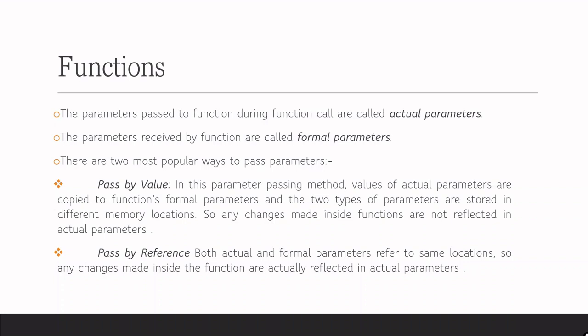Whereas in pass by reference, both actual and formal parameters refer to the same location. Because of that, any changes made inside the function will get reflected even outside the function. So, that permanent change happens if we call a function by reference. In call by value, that change will not be permanent.